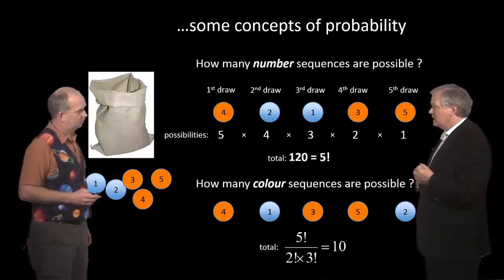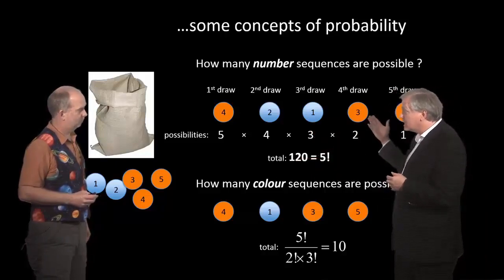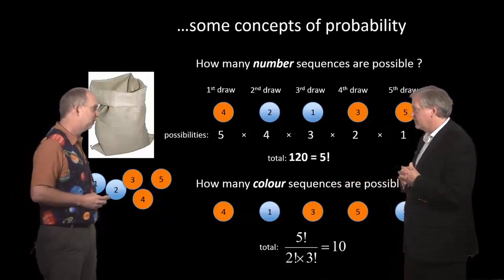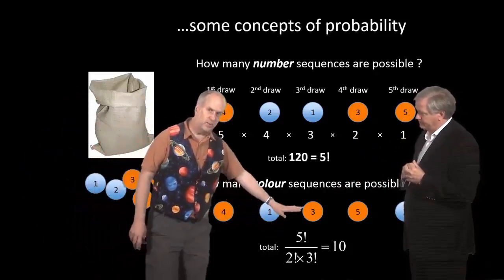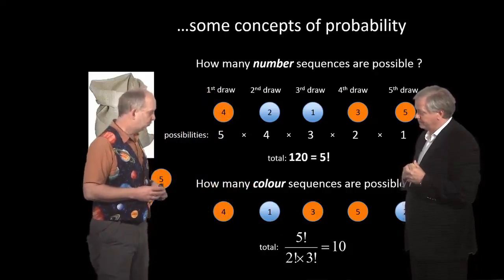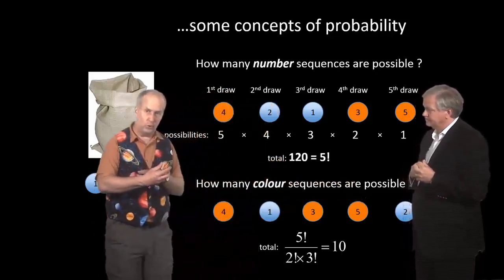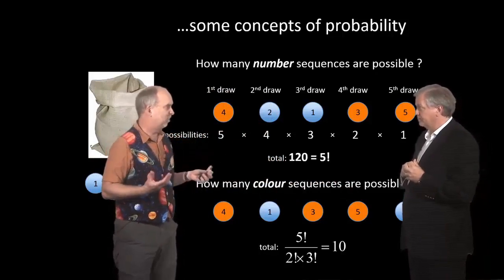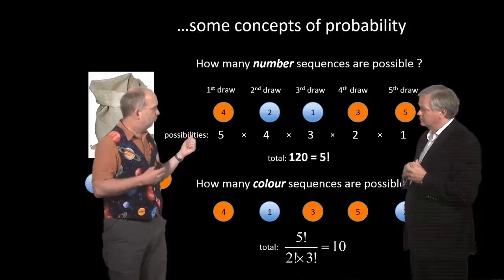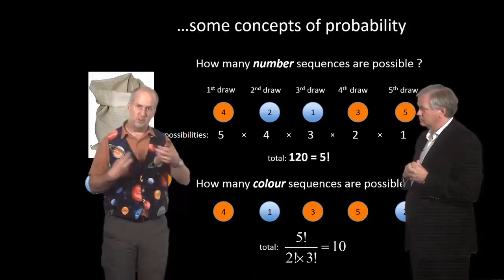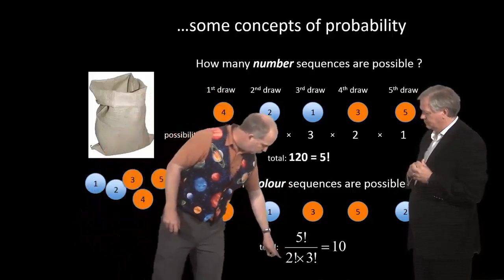So we're going to count how many come out this way. We know there are 120 total possibilities, but we can divide that through by how many will look the same to us. For each combination, there could be one with the blue ball first and the other blue ball second. So we look at all the different ways we can arrange two balls, which is just two factorial. And also we've got the three red balls—three factorial, which is six. So we're dividing by two factorial by three factorial, and that gives us ten.